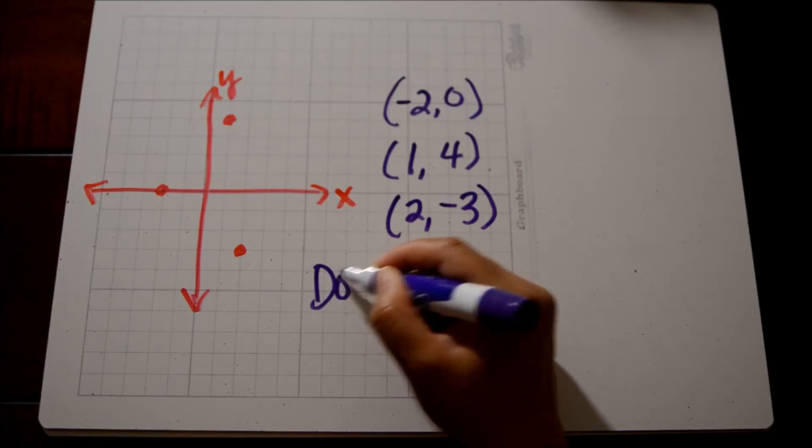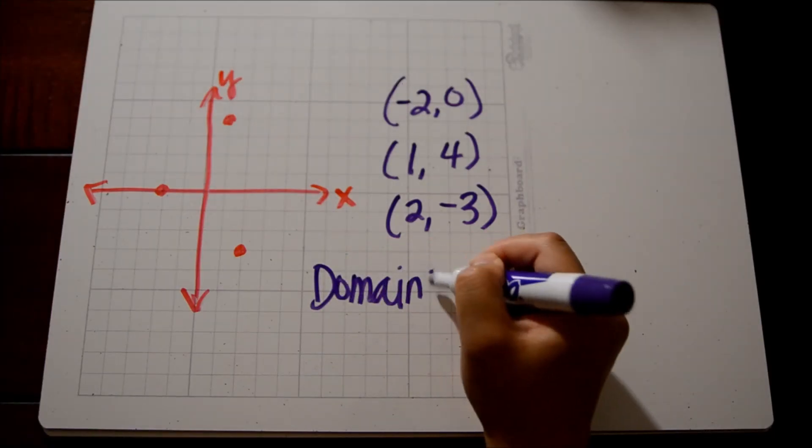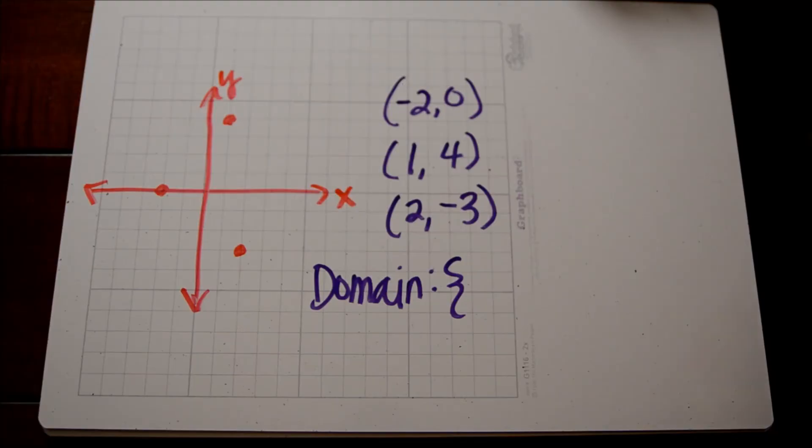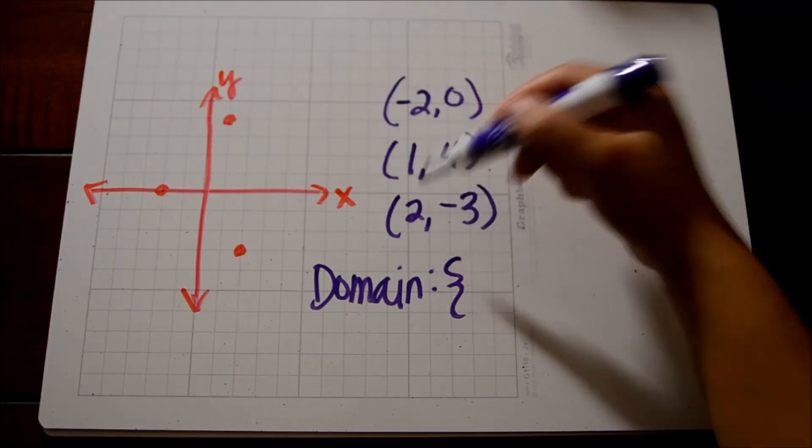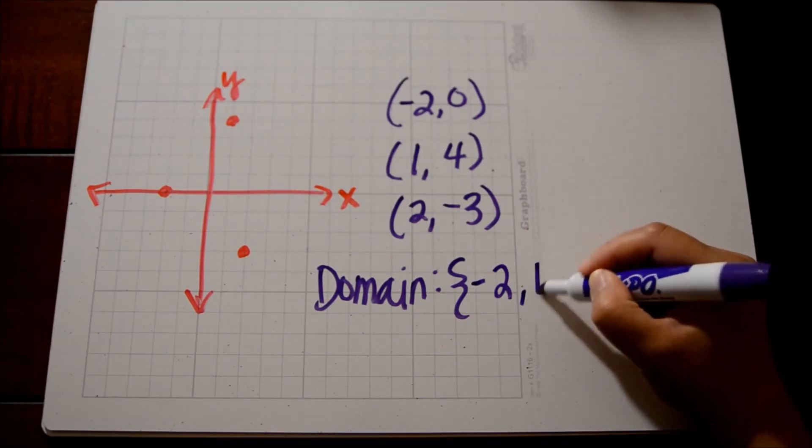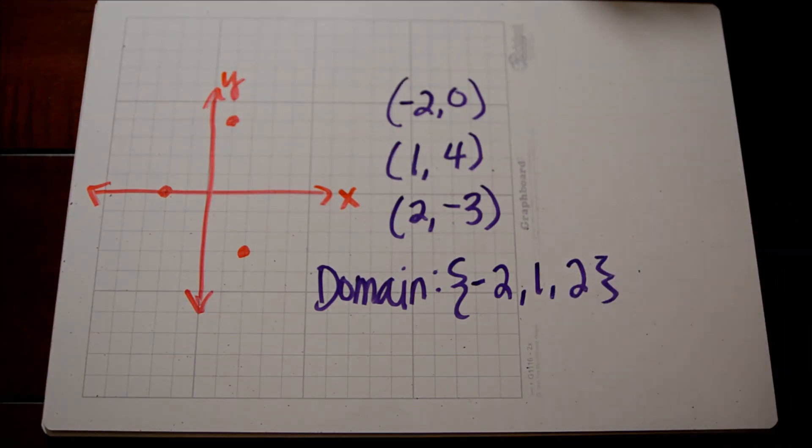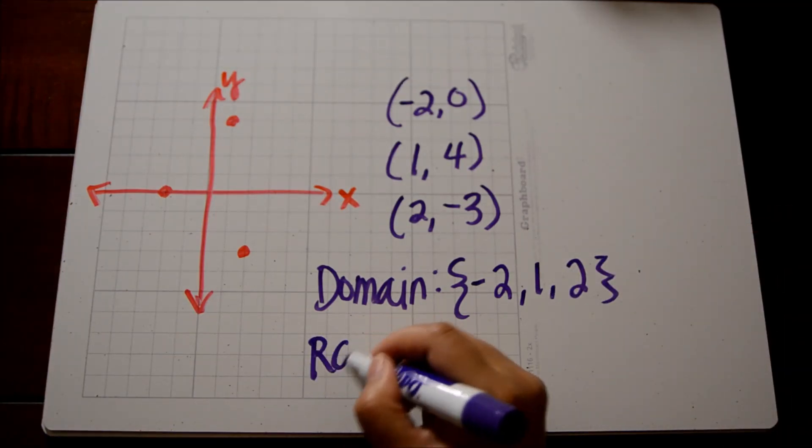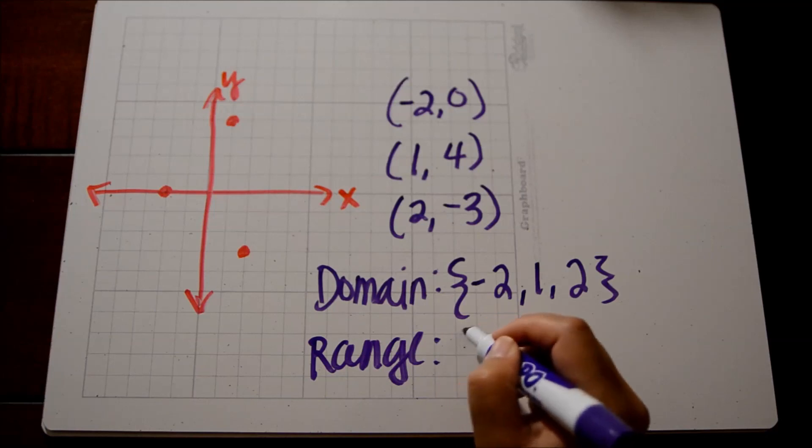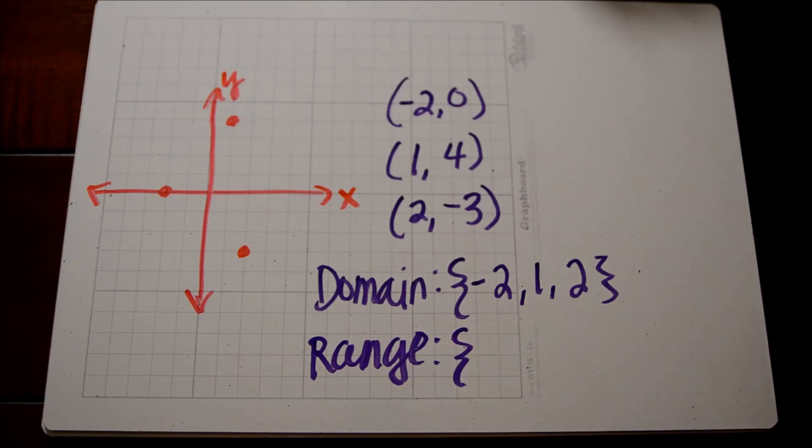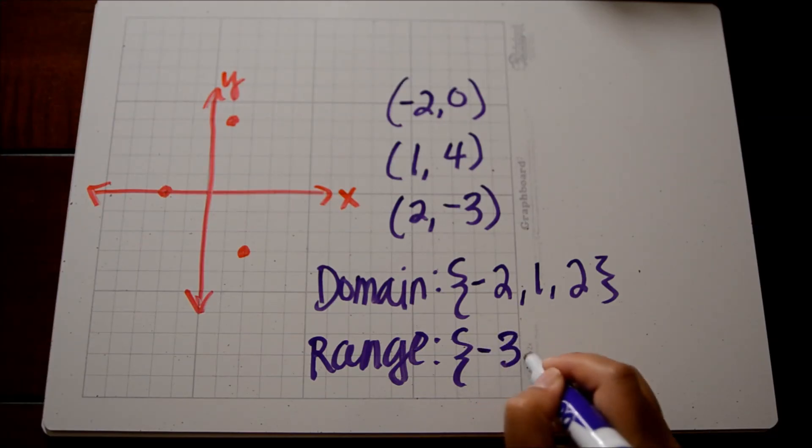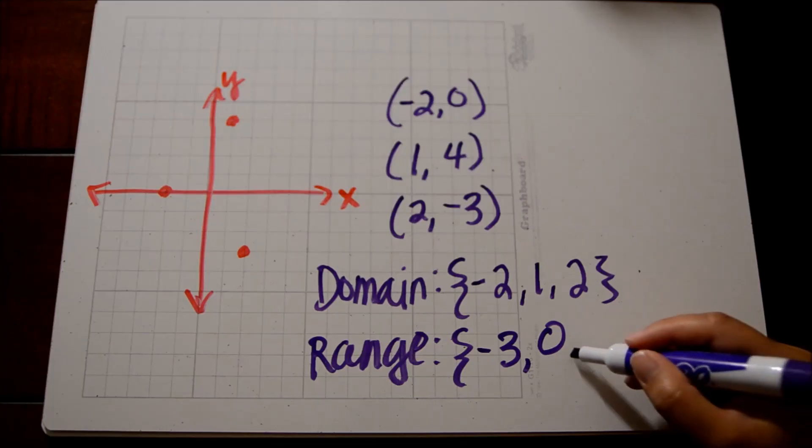So now this problem just becomes like any other problem with ordered pairs. We're going to list out our x values, which are these numbers in that first column. Negative 2, 1, and 2. And our range values are right here. In order from least to greatest, that would be negative 3, 0, and 4.